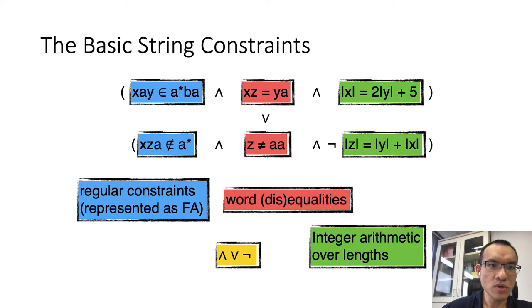All available string constraint solvers support the so-called basic string constraints, which include regular constraints. For instance, X concatenated with A concatenated with Y is in the regular language A star B A, or equalities or disequalities. For instance X, Z is equivalent to Y, A, or Z is not equivalent to A, A. Also integer arithmetic over lengths, for instance the length of X is equivalent to two times the length of Y plus 5, and their boolean connections.